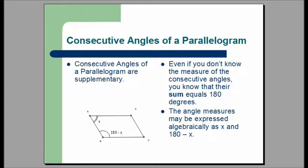Consecutive angles of a parallelogram are supplementary. Even if you don't know the measure of the consecutive angles individually, you know that their sum equals 180 degrees. The angle measures may be expressed algebraically as x and 180 degrees minus x.